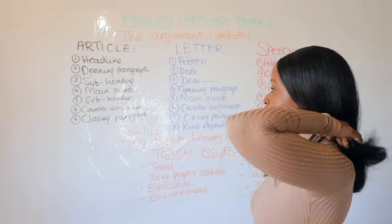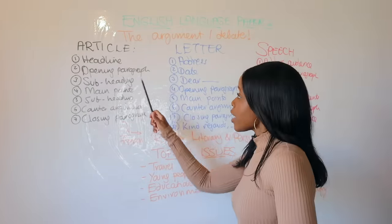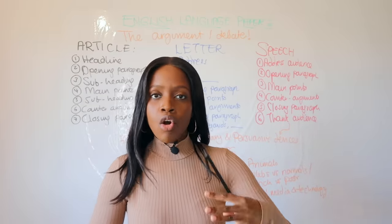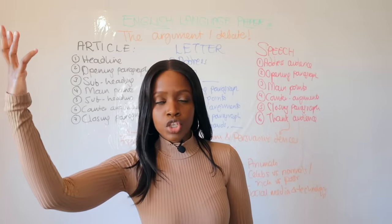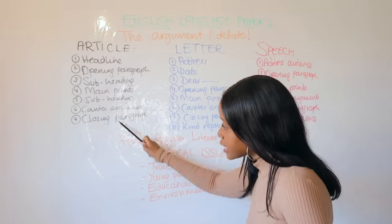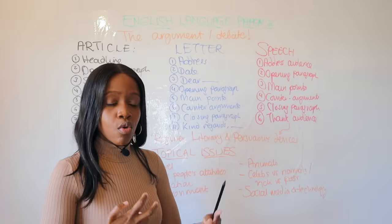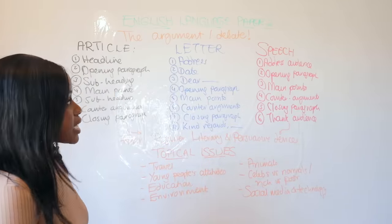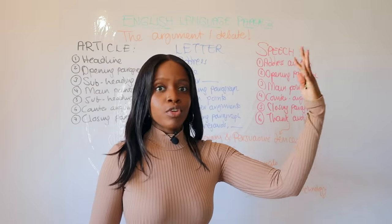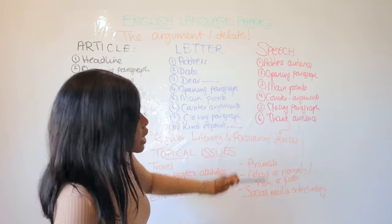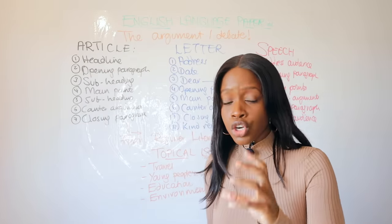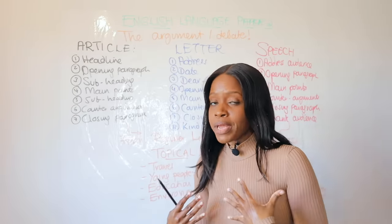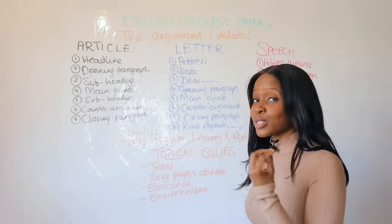When it comes to question number five, you could be asked to produce an article, a letter, or a speech. If you see write a magazine article or a broadsheet article, as long as it says article you follow this seven-step framework. If you're asked to write a letter — to an MP, a doctor, your headmaster — you follow this eight-step framework. And if you're asked to write a speech for your school leavers' day or similar, you follow this six-step framework. I'm going to begin by showing you how to write the perfect article.